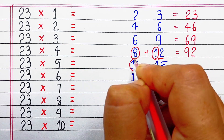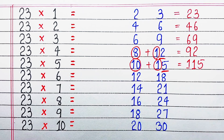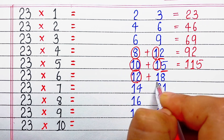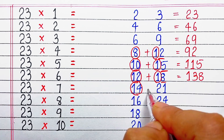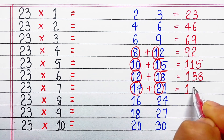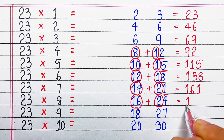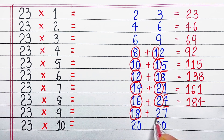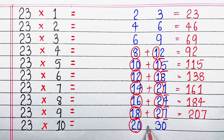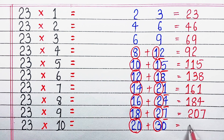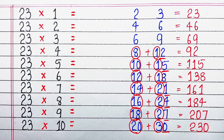Then we add the tens digit of the right number to the left number and write the unit digit of the right number as it is. So: 8 plus 1 is 9, write 2, giving 92. Then 10 plus 1 is 11, write 5, giving 115. Then 12 plus 1 is 13, write 8, giving 138. Then 14 plus 2 is 16, write 1, giving 161. Then 16 plus 2 is 18, write 4, giving 184. Then 18 plus 2 is 20, write 7, giving 207. Then 20 plus 3 is 23, write 0, giving 230.